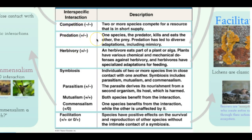Predation is when there's a predator and a prey. The predator is the plus-one — it gains benefit — while the prey is the negative, as the prey's population goes down. Herbivory is when an herbivore benefits from the relationship while the plants receive a negative result. Then there are three types of symbiosis and facilitation. Symbiosis is when two different species live in close proximity — it could be good for one or both species.